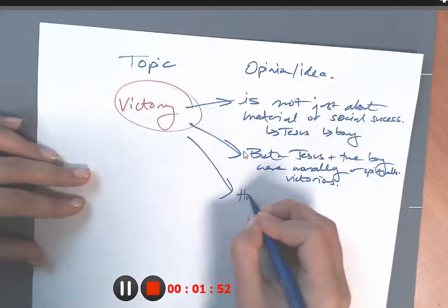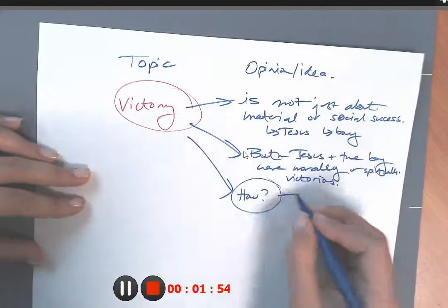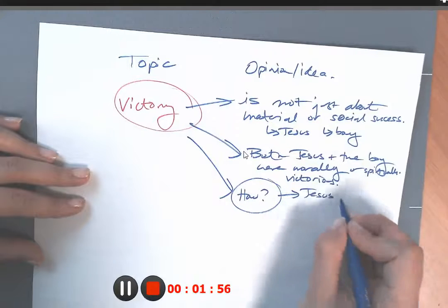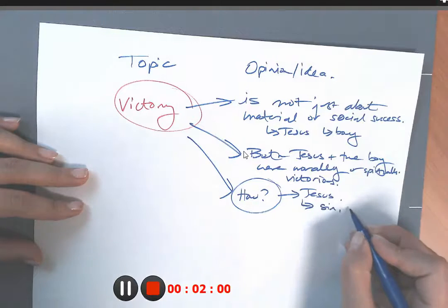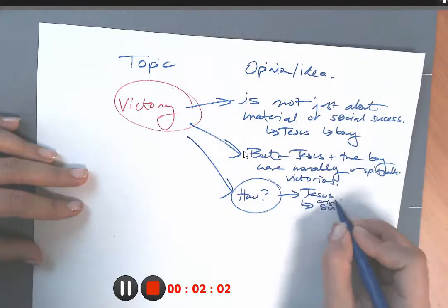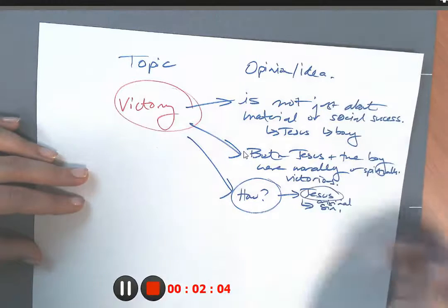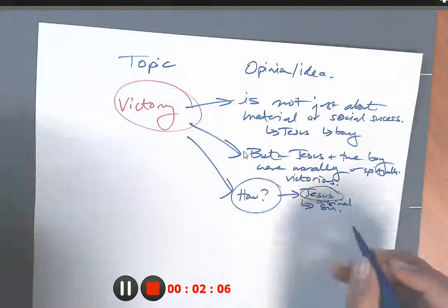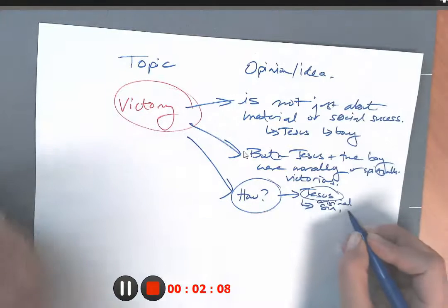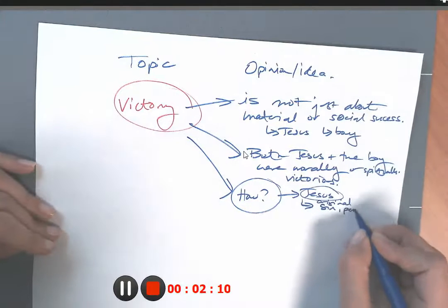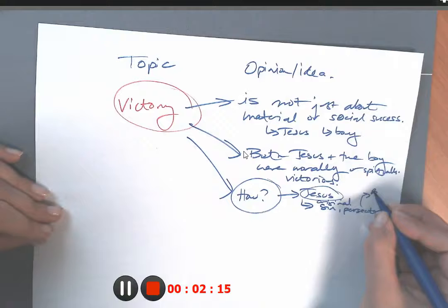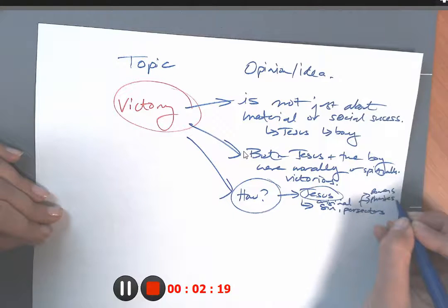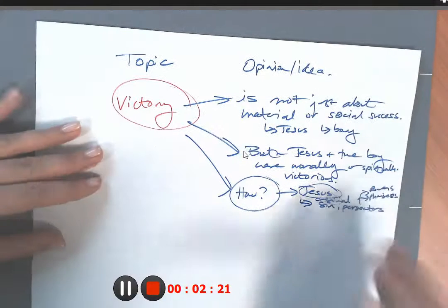Okay. Well, then how? The question is how? Well, Jesus, we talked about this already. Jesus was victorious over sin, over original sin. He was victorious against, you know, he kept going. He was victorious against his persecutors, which were both the Romans and the Pharisees. And so he was victorious because he kept going up until the cross, of course.